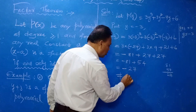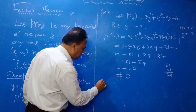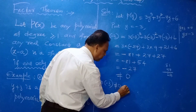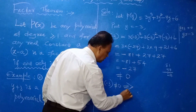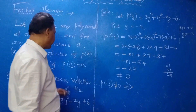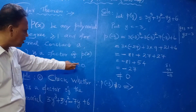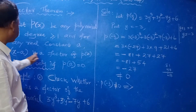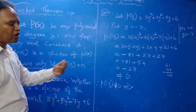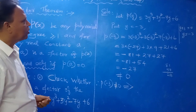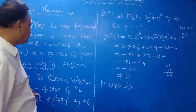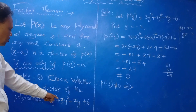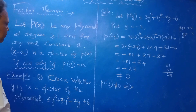P of minus 3 is not equal to 0. According to the factor theorem, P of A equal to 0 is required to say it is a factor, but here it is not equal to 0. Therefore, Y plus 3 is not a factor of this polynomial P of Y.